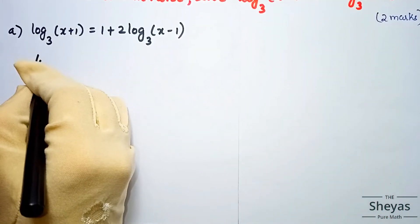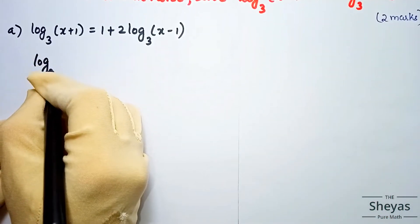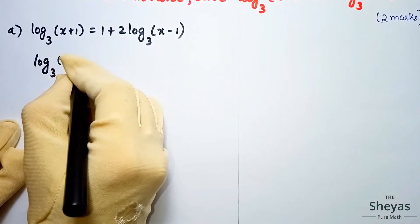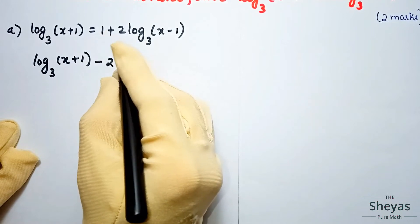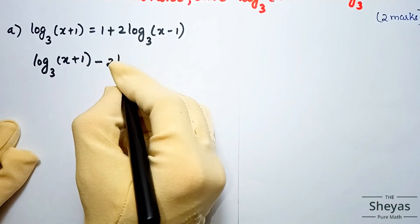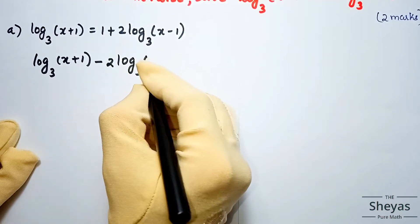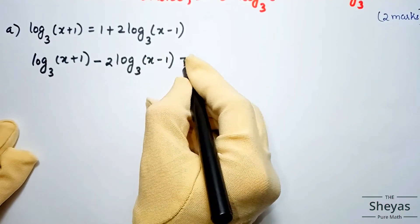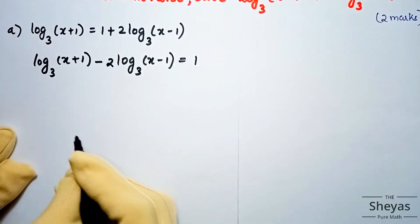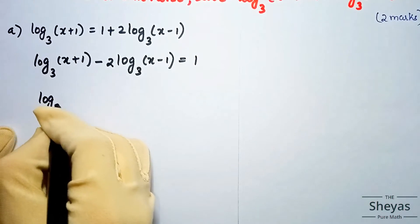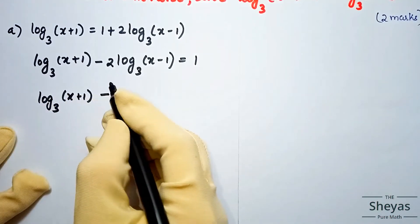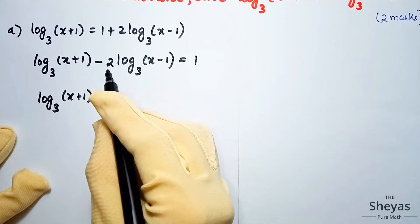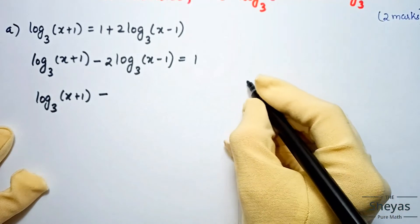Now, keep log base 3 of (x+1) as it is and bring the other term to the left side, so it becomes minus 2 log base 3 of (x-1) is equal to 1. Here, since there is a coefficient in front of the log, we can apply the power rule.